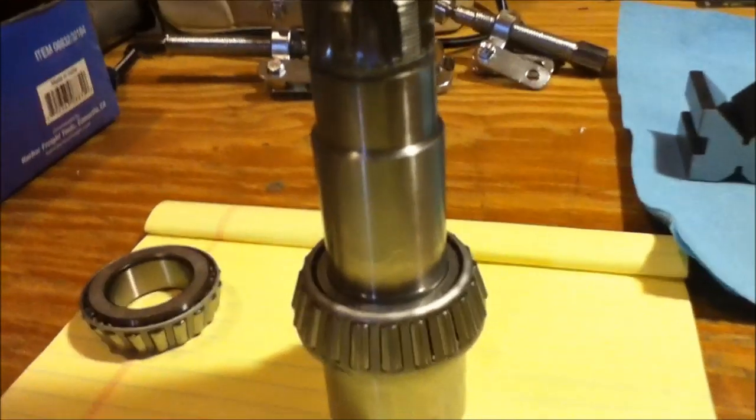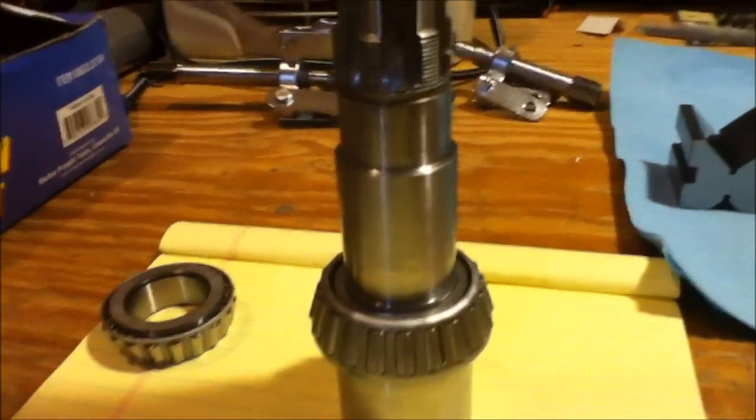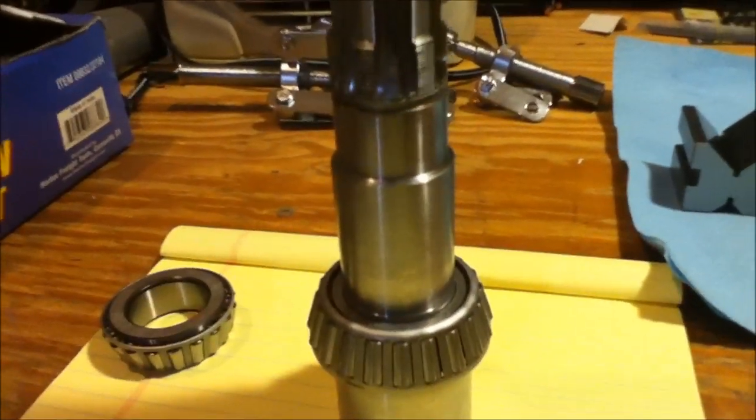So that was how I got the lower bearing on there. I would have preferred not to have to pound. One of the things I may be considering getting here pretty soon is an arbor press so that I can do this without pounding, because these are definitely not drop fits, at least not on this machine.